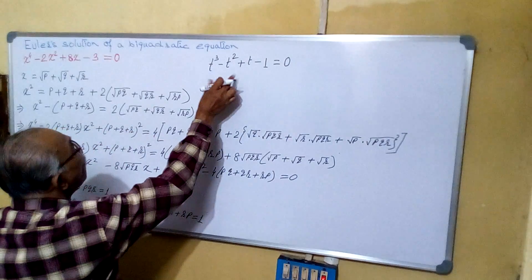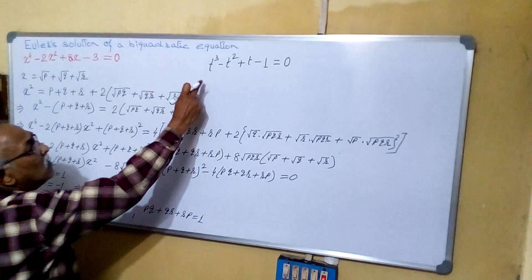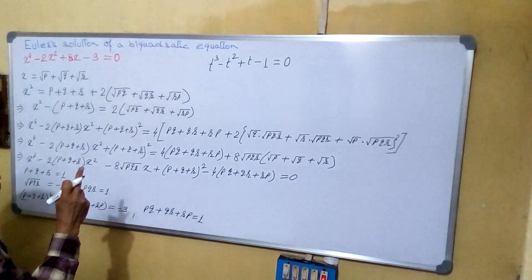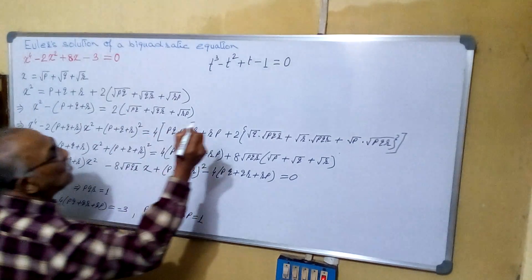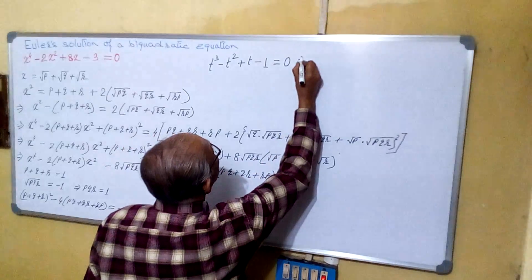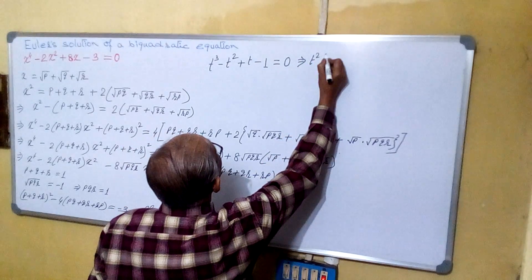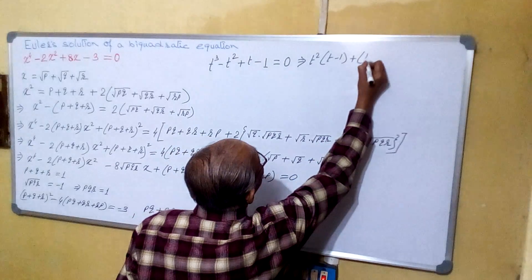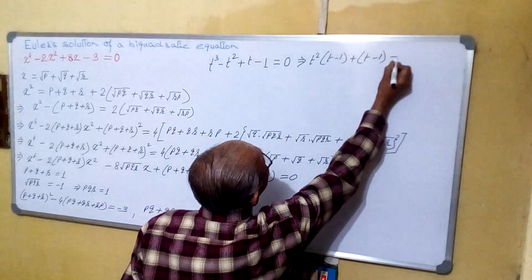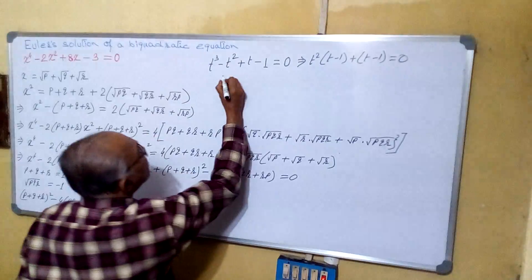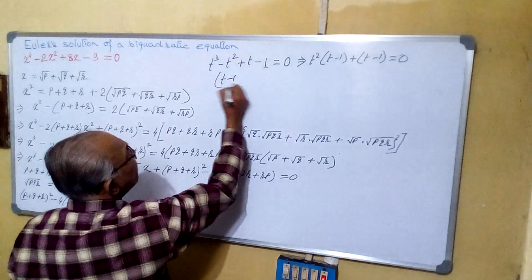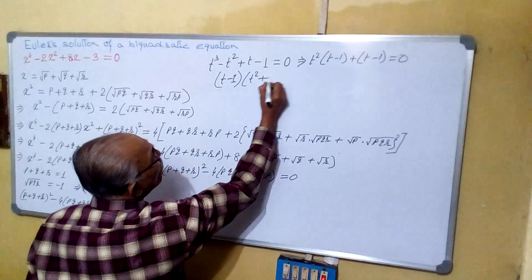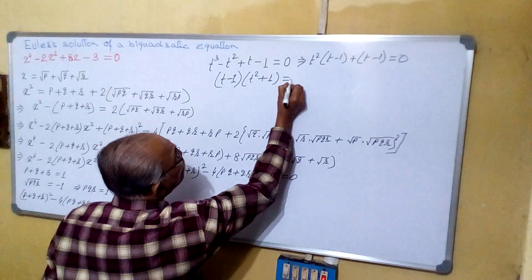This is called Euler's cubic equation, formed for this problem. From here we can proceed. That is T squared into (T minus 1) plus (T minus 1) equals to 0, giving (T minus 1) into (T squared plus 1) equals to 0.